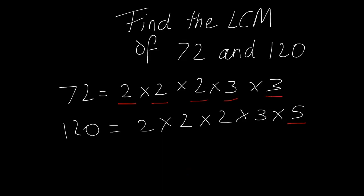Lastly, find the lowest common multiple of 72 and 120. We use the tree diagram method. So: 72 equals 2 times 2 times 2 times 3 times 3, and 120 equals 2 times 2 times 2 times 5. In order to find the lowest common multiple, we look at how many of each number are present. The first lowest prime number is 2 — we see there are three 2s in both sets, so we'll include three 2s: 2 times 2 times 2.